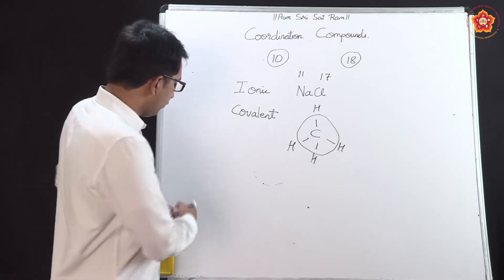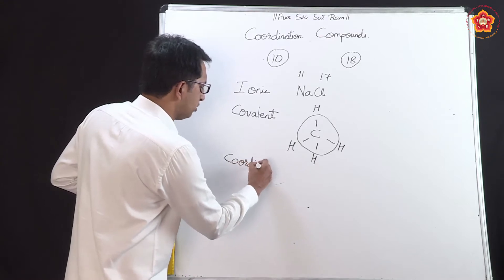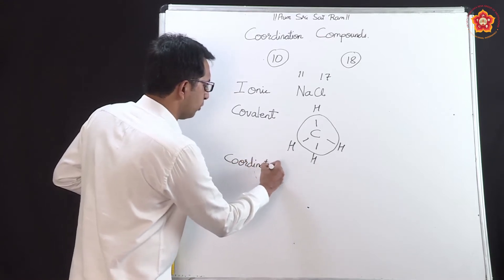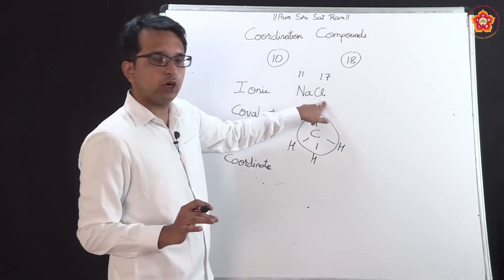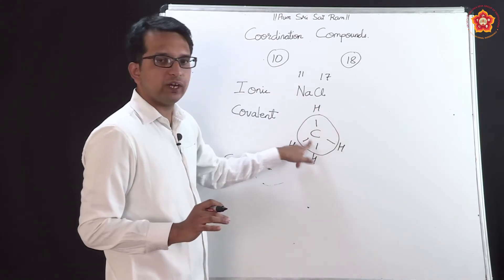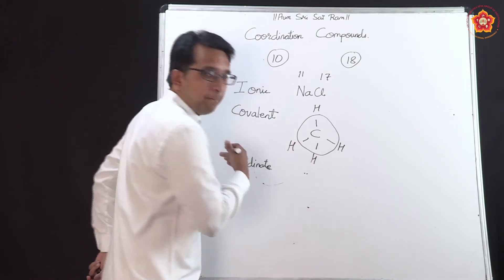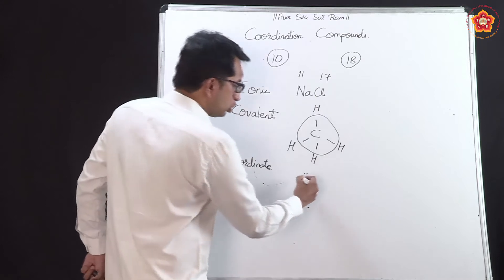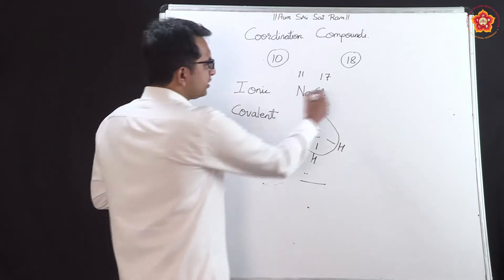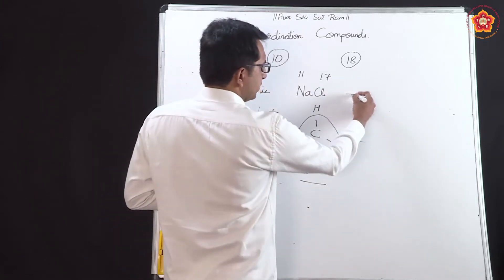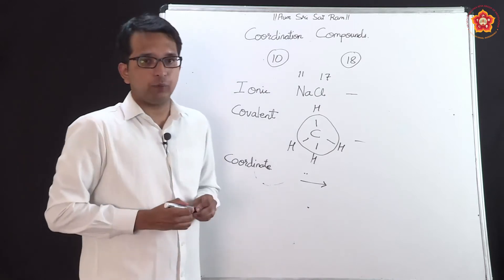Along with this, we are now going to come across another new type of bond called a coordinate bond. In ionic bonding there was transfer of one electron; in covalent bonding there was sharing of electrons; whereas in a coordinate bond there is a transfer of a pair of electrons — two electrons go directly to the other species. The bonding is shown by an arrow mark.